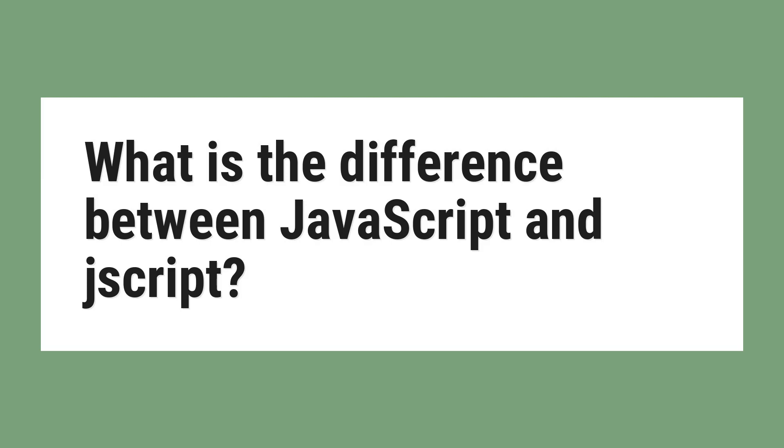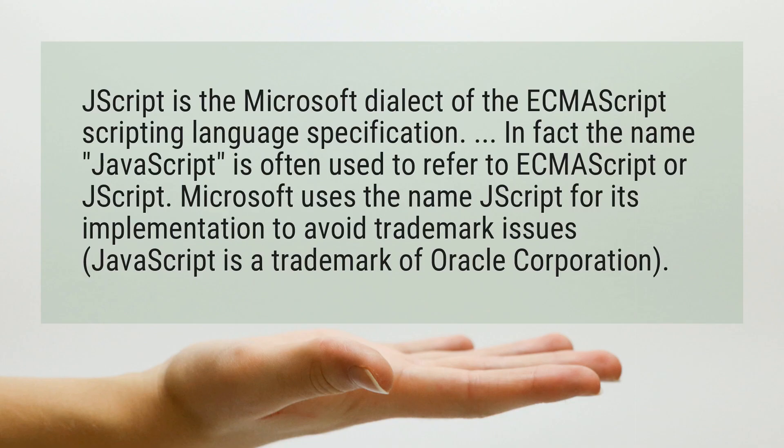What is the difference between JavaScript and JScript? JScript is the Microsoft dialect of the ECMAScript scripting language specification. In fact, the name JavaScript is often used to refer to ECMAScript or JScript. Microsoft uses the name JScript for its implementation to avoid trademark issues, as JavaScript is a trademark of Oracle Corporation.